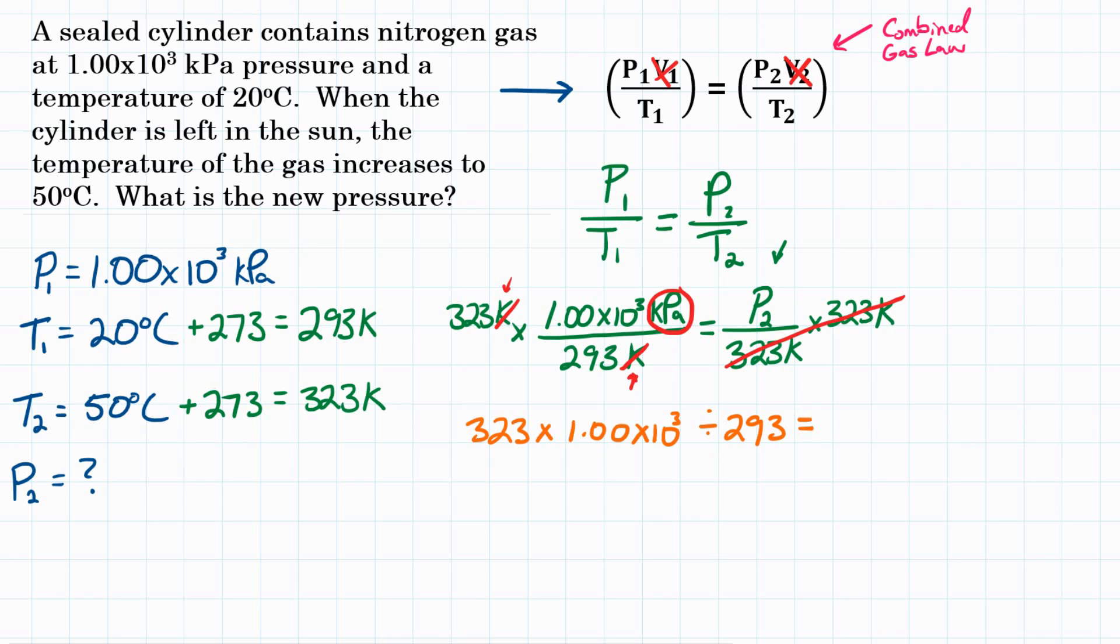And you should get around 1,102 and some change. So P2 equals, if we turn our answer into scientific notation, 1.10 times 10 to the third. And again, our units are kPa. So final answer, what is the new pressure? That would be 1.10 times 10 to the third kPa.